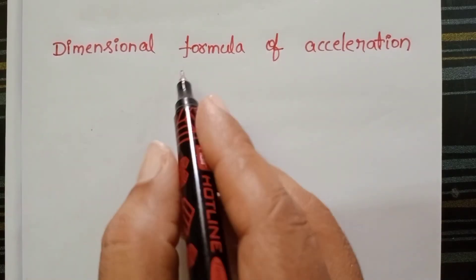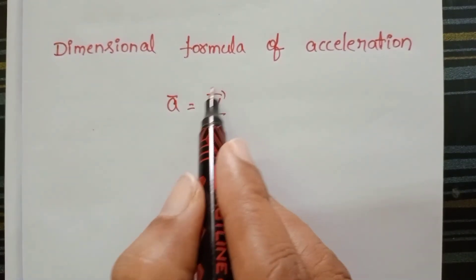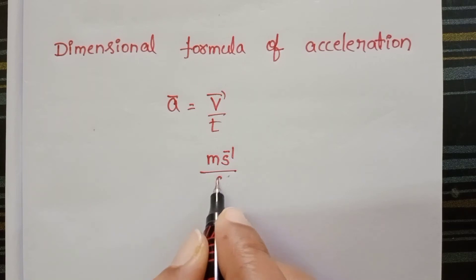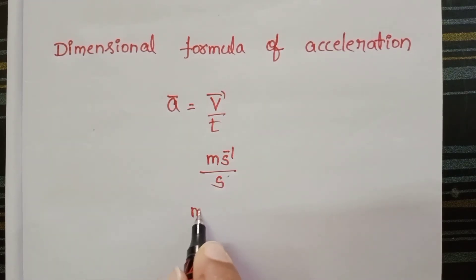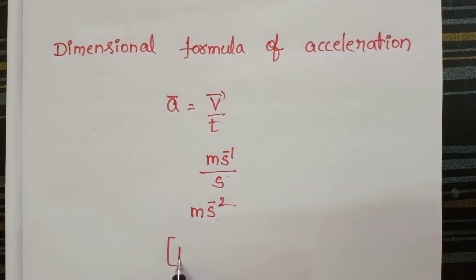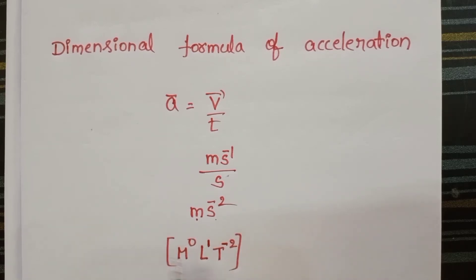The dimensional formula of acceleration. Rate of change of velocity is called acceleration. The SI unit of velocity is meter per second and the SI unit of time is second. So the SI unit of acceleration is meter per second squared. There is no mass, so M power 0; L is raised to the power 1; and time is raised to the power minus 2. Therefore, the dimensional formula of acceleration is M⁰L¹T⁻².